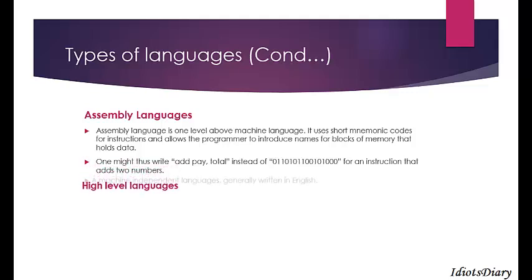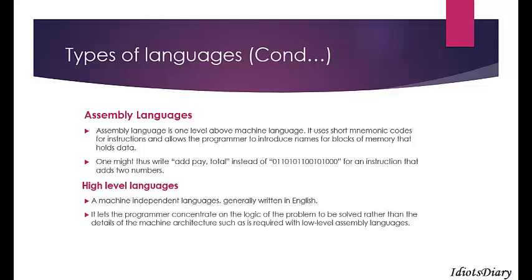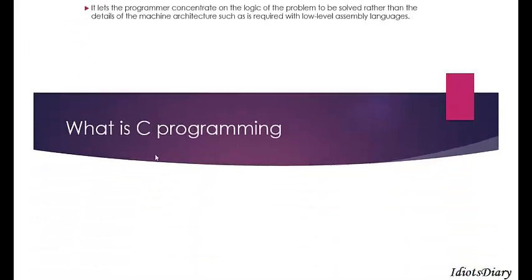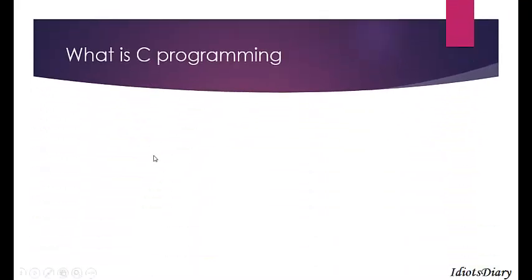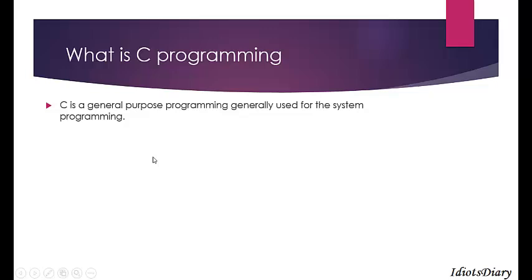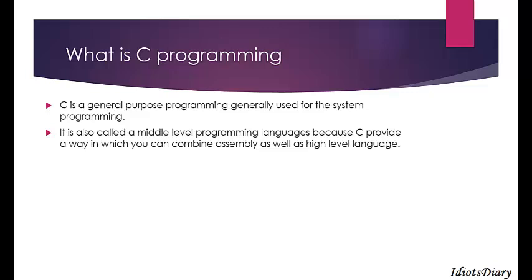High-level language has syntax that matches English, and it is machine independent so it does not vary from computer to computer. C is a general purpose programming language generally used for system programming. C combines assembly language as well as high-level language, so it is called a middle-level programming language.